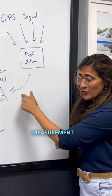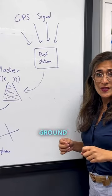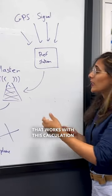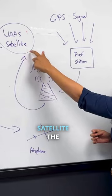They send this correction measurement to the master ground station that works with this calculation and send it to the WAAS satellite.